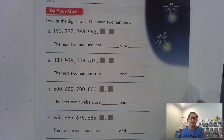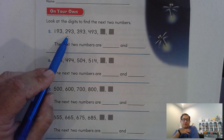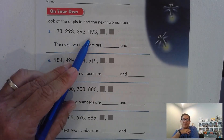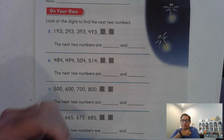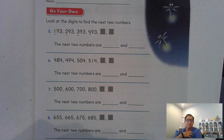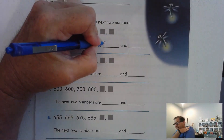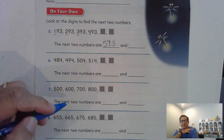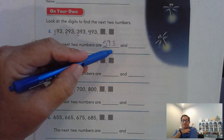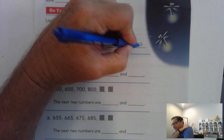Now let's look at page 95. Look at the digits to find the next two numbers: 193, 293, 393, 493. The only digit that's changing is the hundreds, and we're going to increase by one each time. So what number comes after 493? 593. And if we're increasing by 100, the next would be 693.